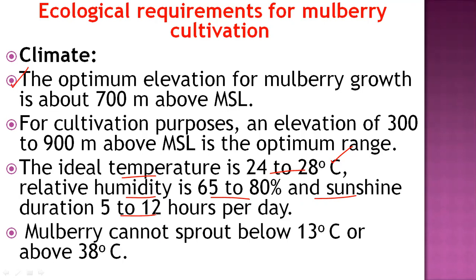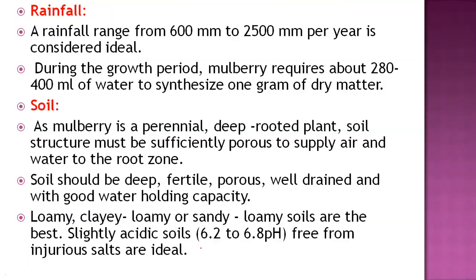The mulberry plant will not sprout properly if the temperature falls to 13 degrees Celsius or rises above 38 degrees Celsius, resulting in reduced feed for silkworms. The ideal rainfall for mulberry cultivation ranges from 600 mm to 2500 mm. During the growth period, mulberry requires about 280 to 400 ml of water to synthesize one gram of dry matter.